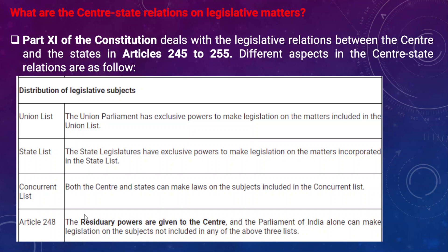Turning to legislative matters, Part 11 of the Indian Constitution deals with the legislative relations between center and states. Articles 245 to 255 contain constitutional provisions specifically dealing with legislative matters between the union and states. The key aspects are the union list, state list, concurrent list, and Article 248, which talks about residuary powers.